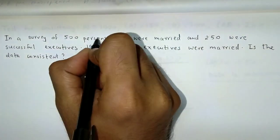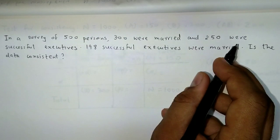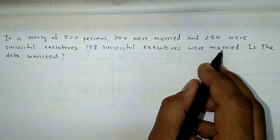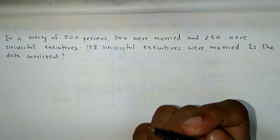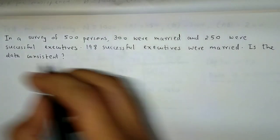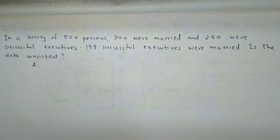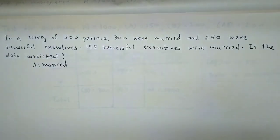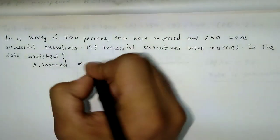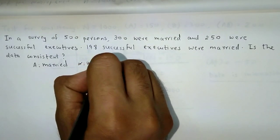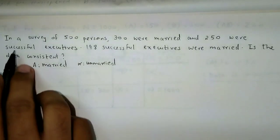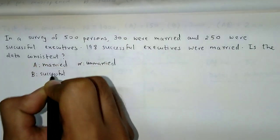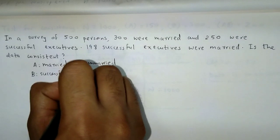In a survey of 500 persons, 300 were married and 250 were successful executives. 198 successful executives were married. Is the data consistent? First, we need to define our attributes. Let A represent the attribute 'married,' so alpha would represent 'unmarried.' Then we define B as 'successful executives.'